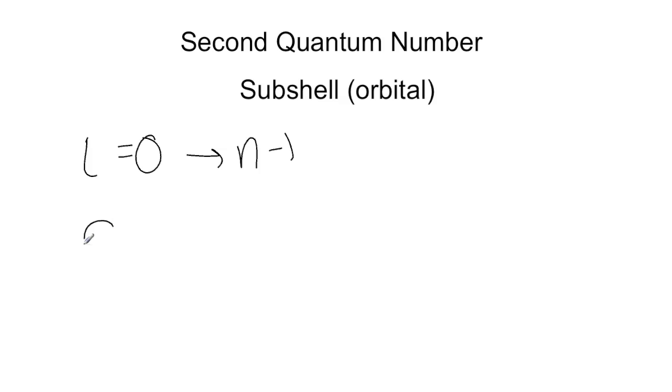For L equals zero, we have our S shell. If you've got L equals one, then you'll have a P. If you've got a two, you'll have a D, and if you've got a three, you'll have an F. These all have different shapes. The S is spherical, the P is a dumbbell shape, and the D is a double dumbbell shape. As the energy shell gets bigger, the orbitals get more elaborate as well.